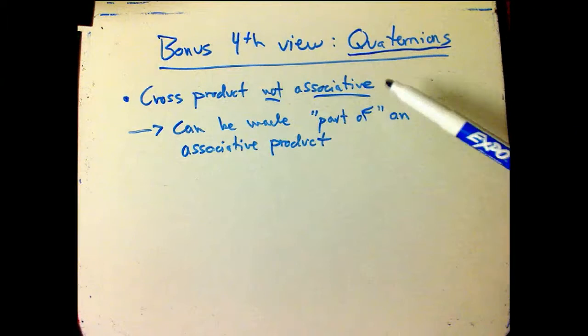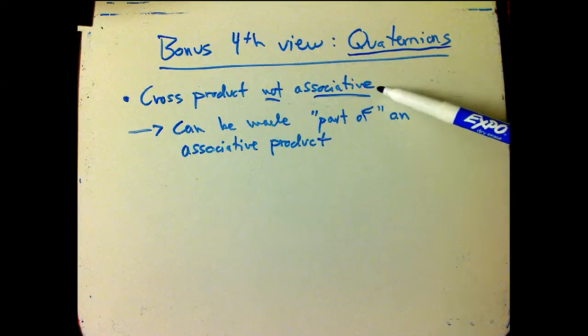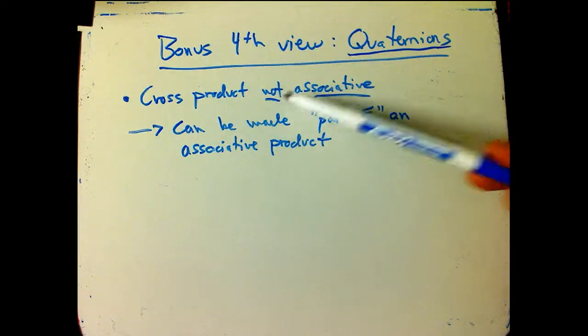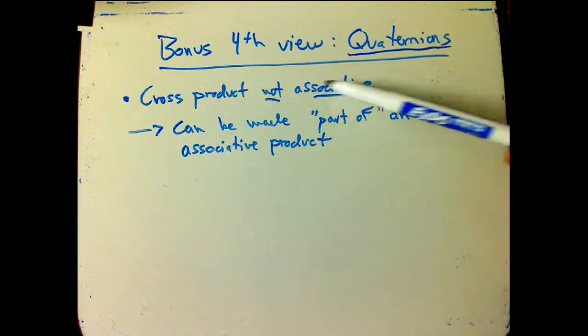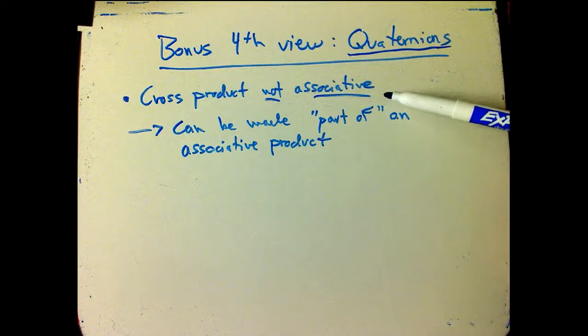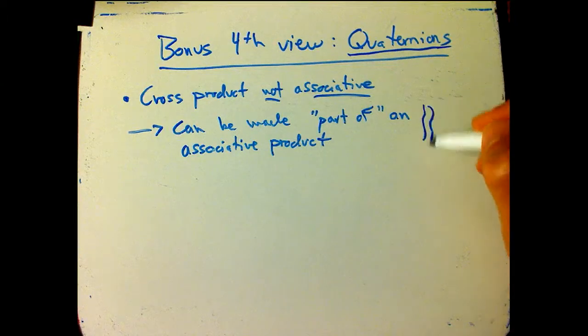The cross product, remember, is not associative. Way back in the first view, we looked at how it's not associative, and the vector triple product identity, which led to the Jacobi identity, is basically a measure of how much it's not associative. But you don't just stop there, you can actually make it part of an associative product, which is pretty awesome.